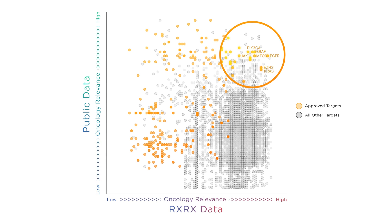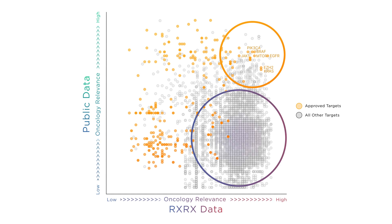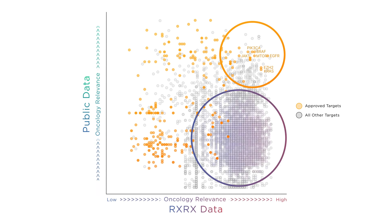But of greater interest, the genes in the bottom right are undrugged targets that the Recursion OS system has flagged as high relevance in oncology, but are not found in public literature.